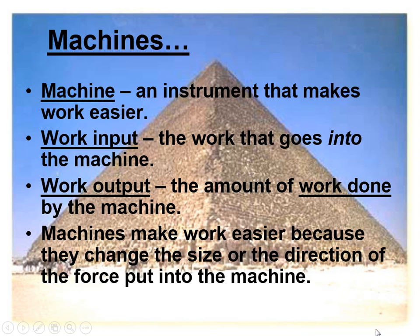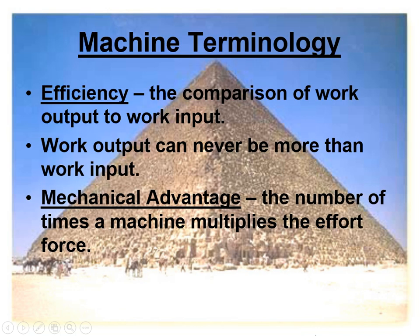A machine is any instrument that makes work easier. Work input is exactly what it says — how much work goes into the machine. Work output is how much comes out, or how much has been done by the machine. Machines make work easier because they change the size or direction of the force. Efficiency is the comparison of work output to work input. Output can never be more than input — they're always going to be equal. Mechanical advantage is what we look for when we think about machines — it's the number of times a machine multiplies the effort force, or in simpler terms, what we can do to the machine to make it work better for us.